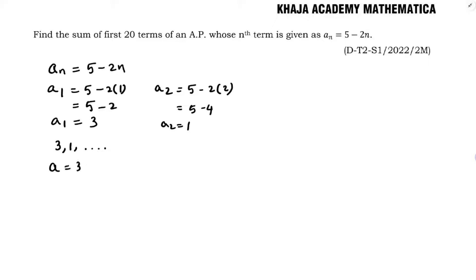So here the first term is 3. Common difference is A2 minus A1. So 1 minus 3 which is minus 2. So common difference is minus 2.